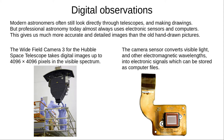These days, while astronomers still sometimes look through telescopes and make drawings, almost all professional astronomy uses electronic sensors and computers. This gives us much more accurate and detailed images, and lets us share images with people around the world. To illustrate how this works, consider the Hubble Space Telescope. Sophisticated cameras, such as the Widefield Camera 3, take digital images at very high resolution.